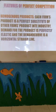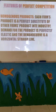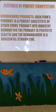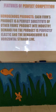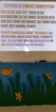The next feature is product homogeneity. Each firm's product is a perfect substitute of other firms' products in the industry. Demand for the product is perfectly elastic, and the demand curve is a horizontal straight line. Products are the same, or homogeneous, because so many firms are making the same products. One firm's product can be used in place of another firm's — each firm's products are substitutes.